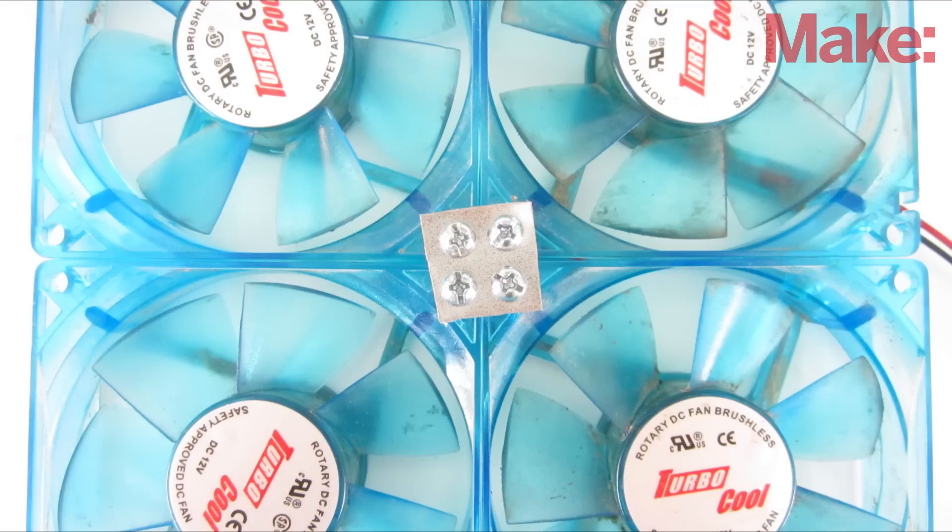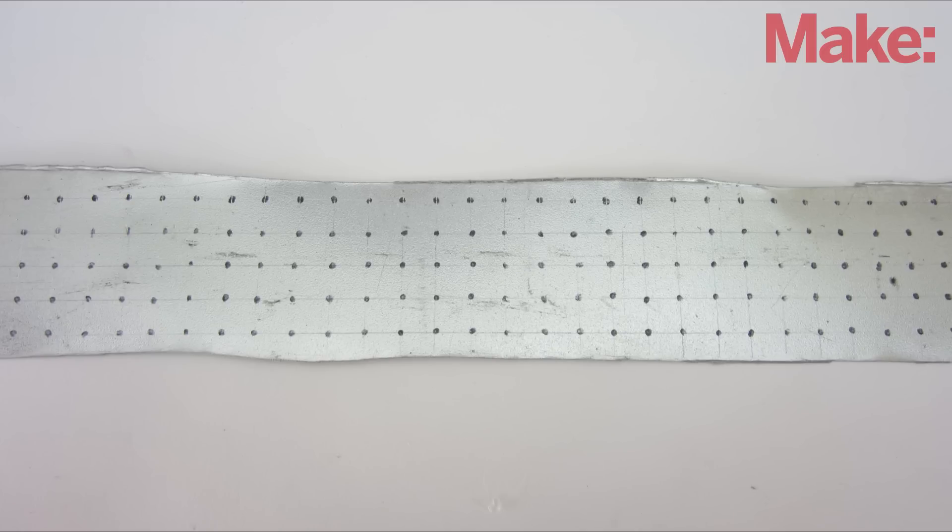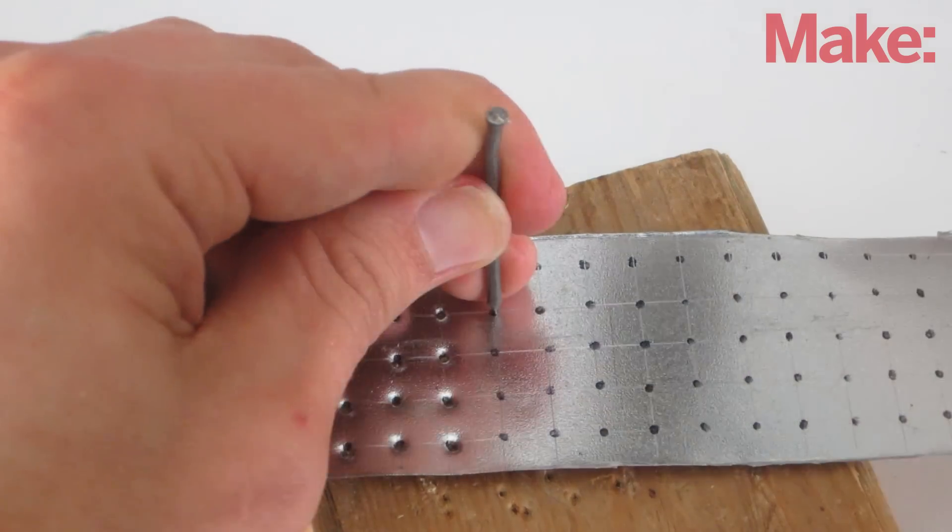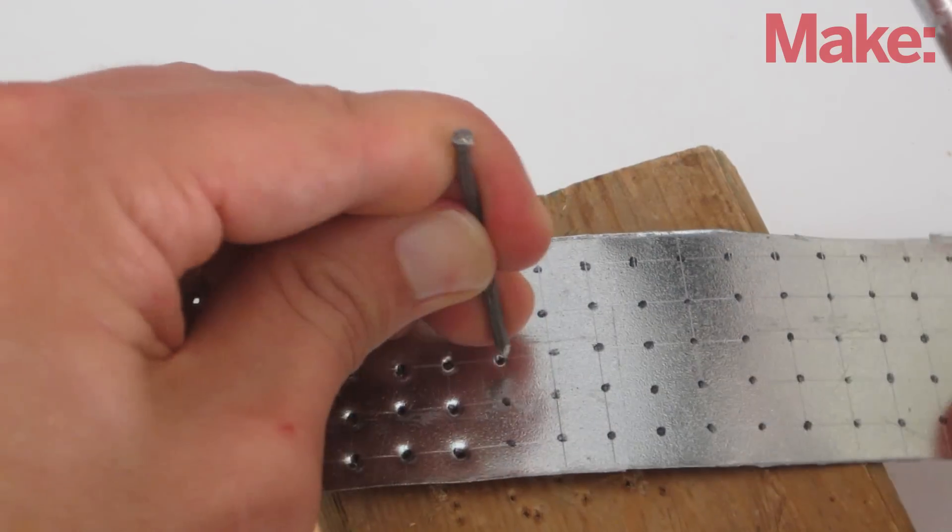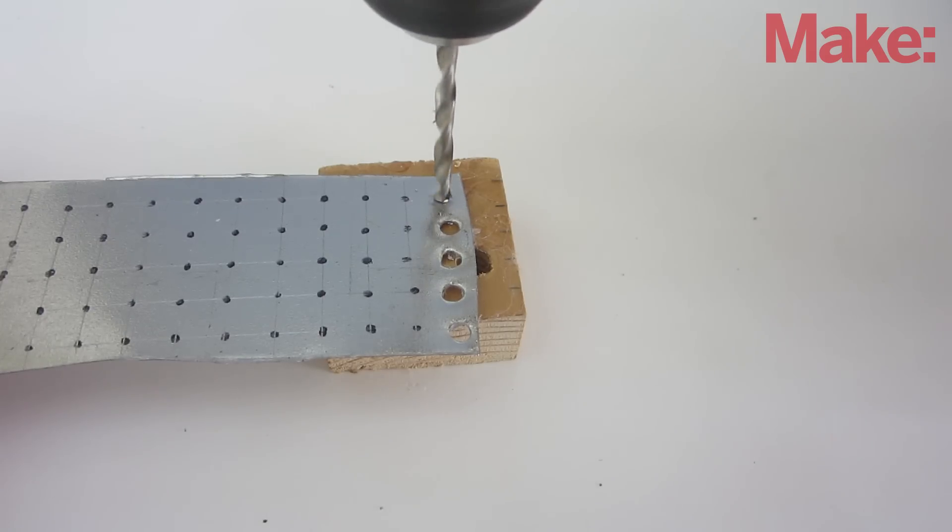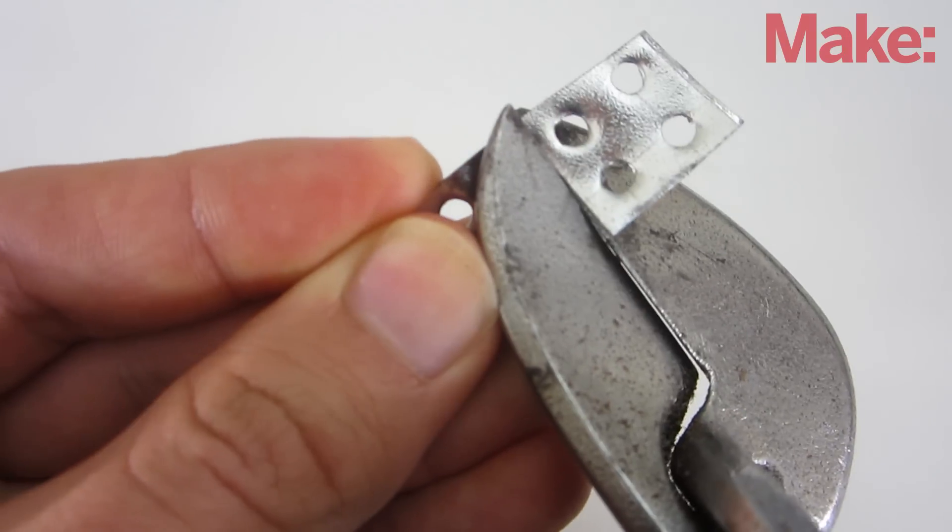I decided to hold the fans together with small metal brackets. Here's an easy way to make them. First, I took a thin piece of sheet metal and marked a grid with lines that were about 5 sixteenths of an inch apart. Next, I used a nail to punch small holes where the lines intersect. Then I used a drill to widen each hole. Lastly, I used tin snips to cut out square sections of four holes.